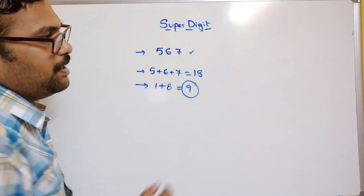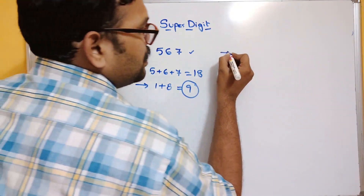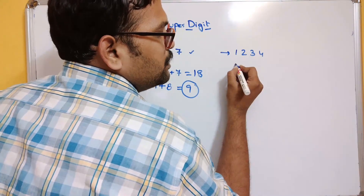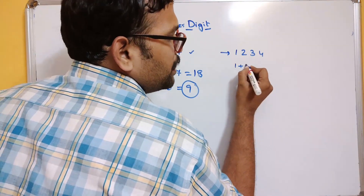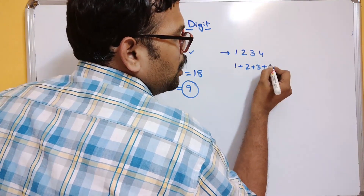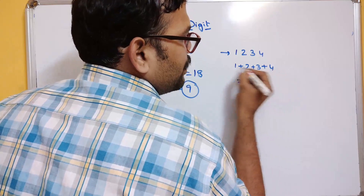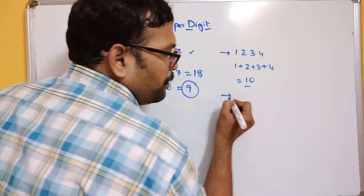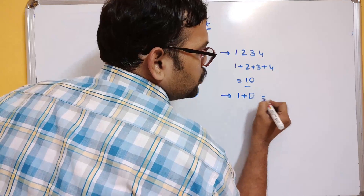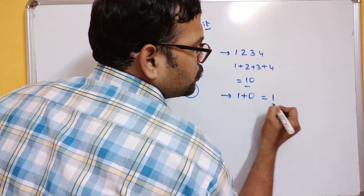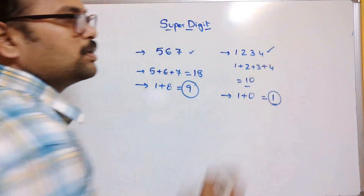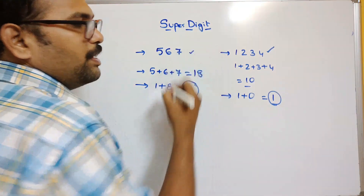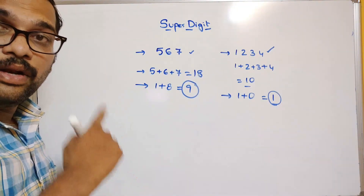Another example: consider 1234. The sum of individual digits is 1 plus 2 plus 3 plus 4, which equals 10 — that's two digits. So we perform 1 plus 0, giving 1. So 1 is the super digit for 1234, and 9 is the super digit for 567. We need to repeat the process until we get a single digit.